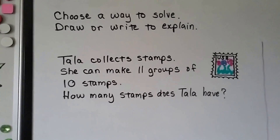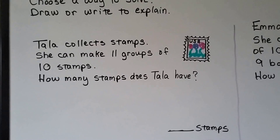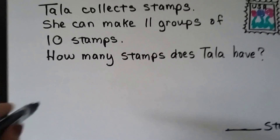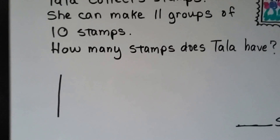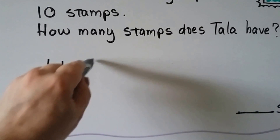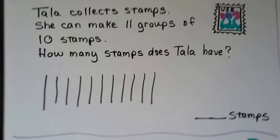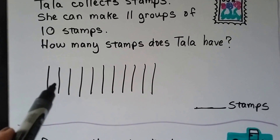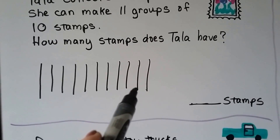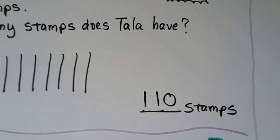Choose a way to solve: draw or write to explain. Tala collects stamps. She can make 11 groups of 10 stamps. How many stamps does Tala have? Well, we can draw counters to help us. We can make a line to be a 10, like a rod of 10. And it says she has 11 of them — 1, 2, 3, 4, 5, 6, 7, 8, 9, 10, 11. So each of those is a 10, and we can count by 10s: 10, 20, 30, 40, 50, 60, 70, 80, 90, 100, 110. 11 groups of 10 is equal to 110.